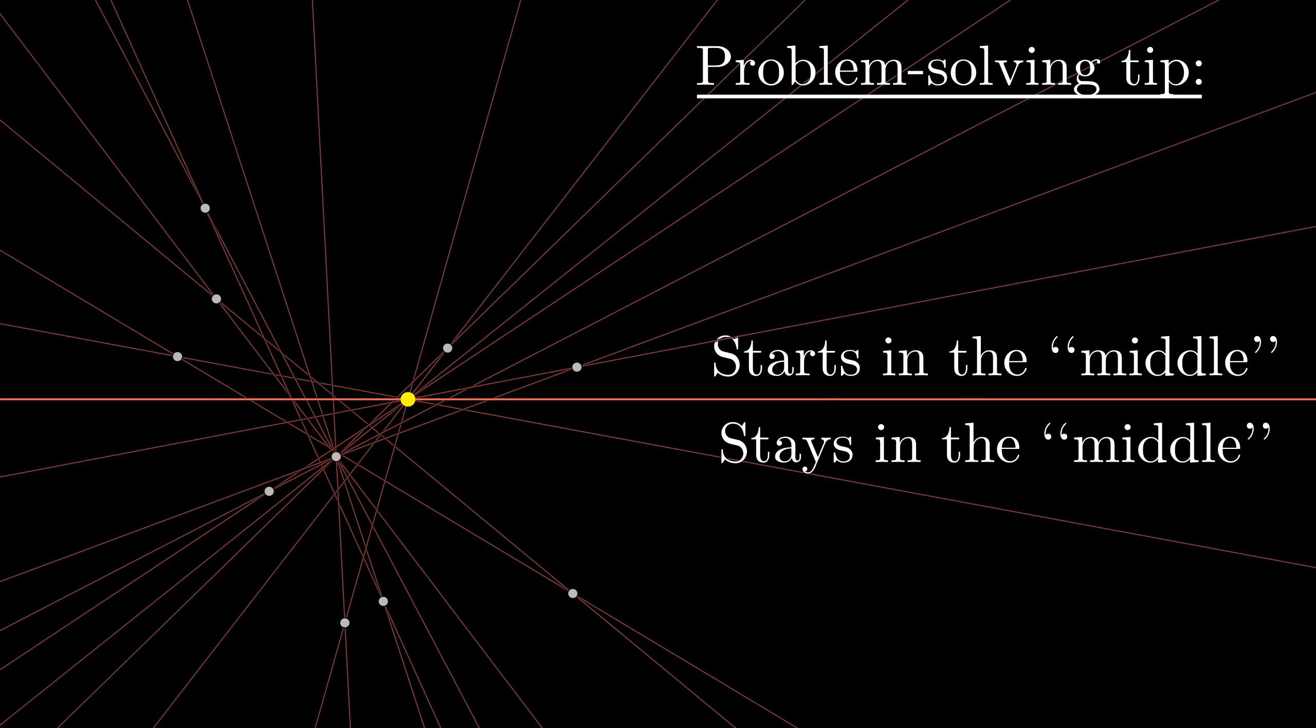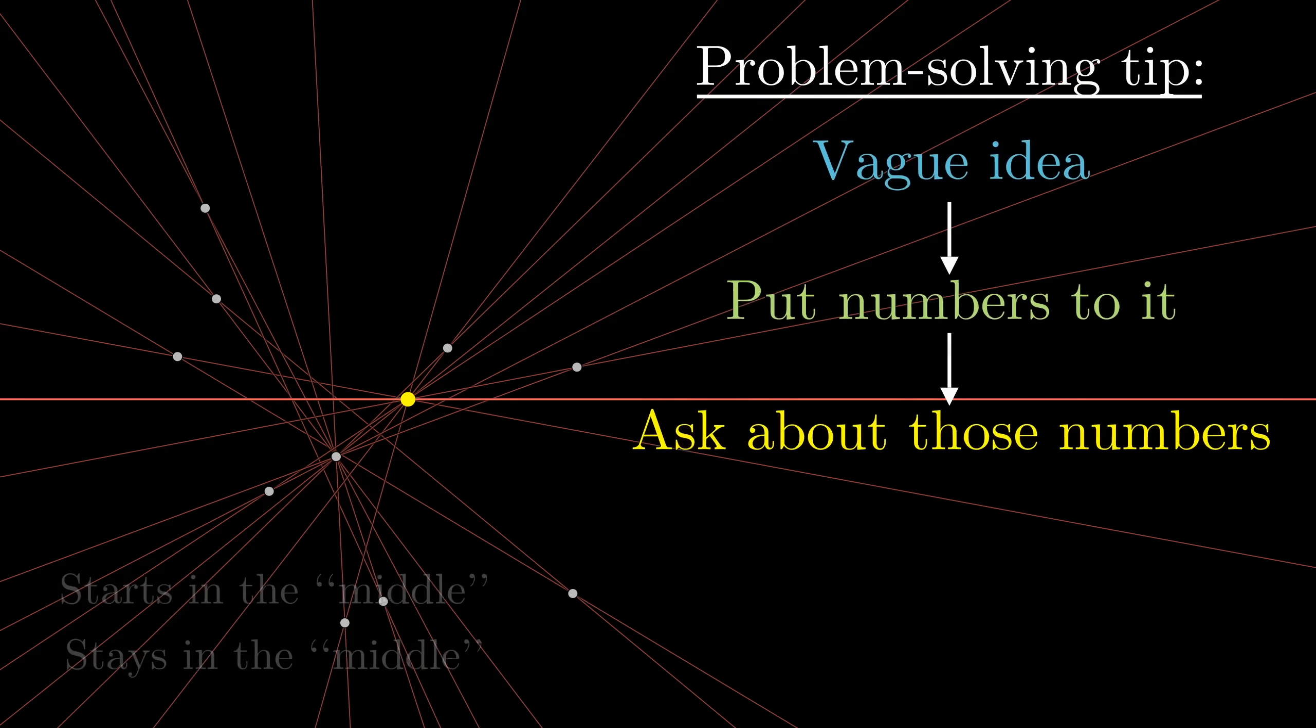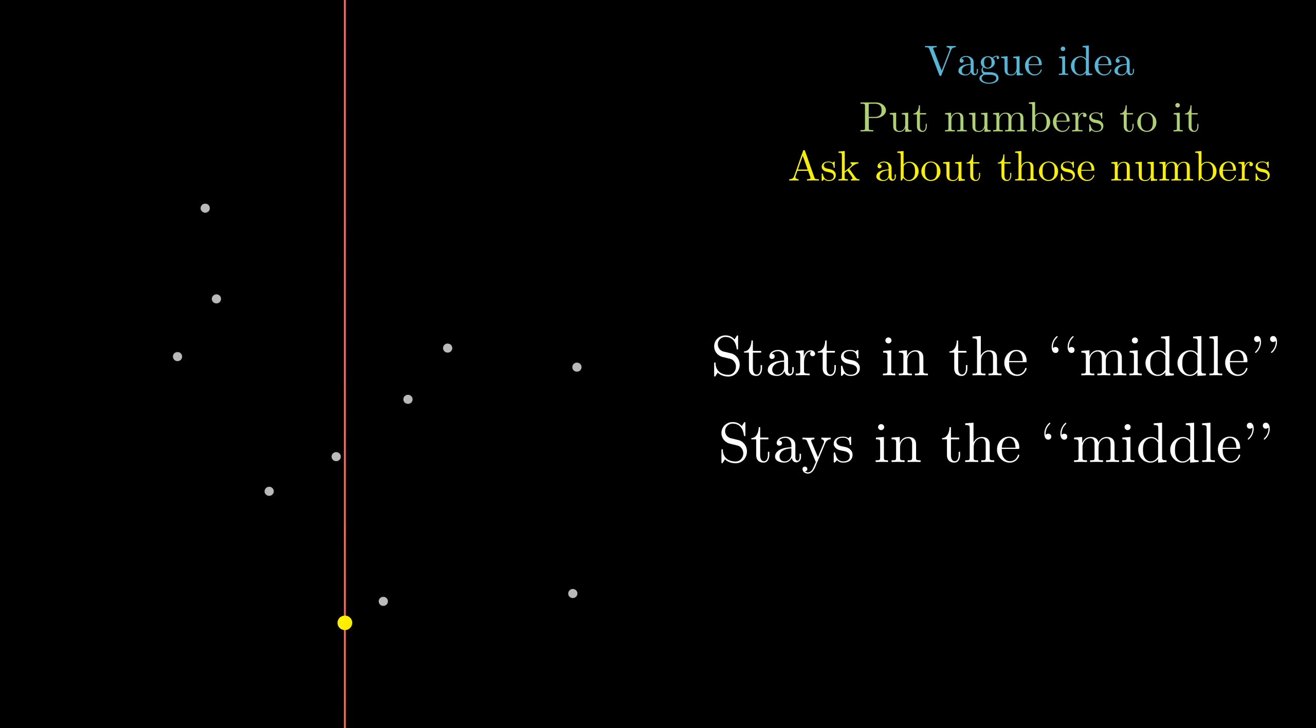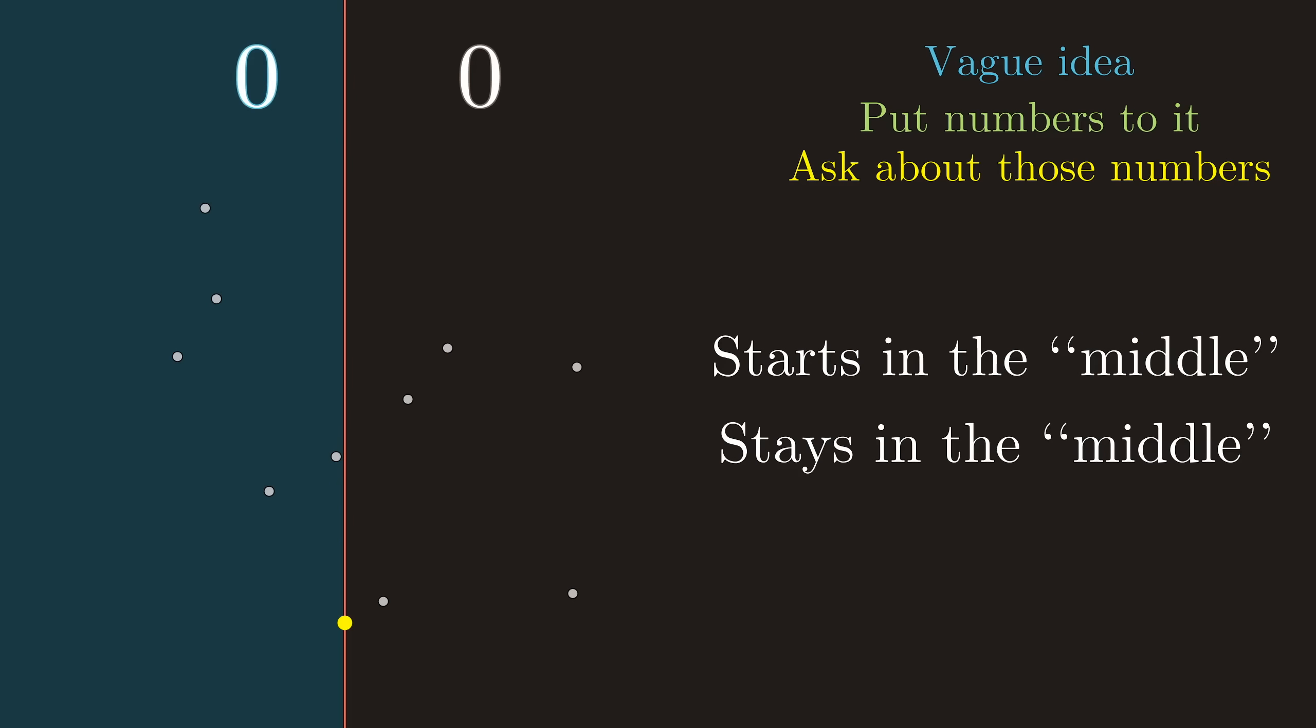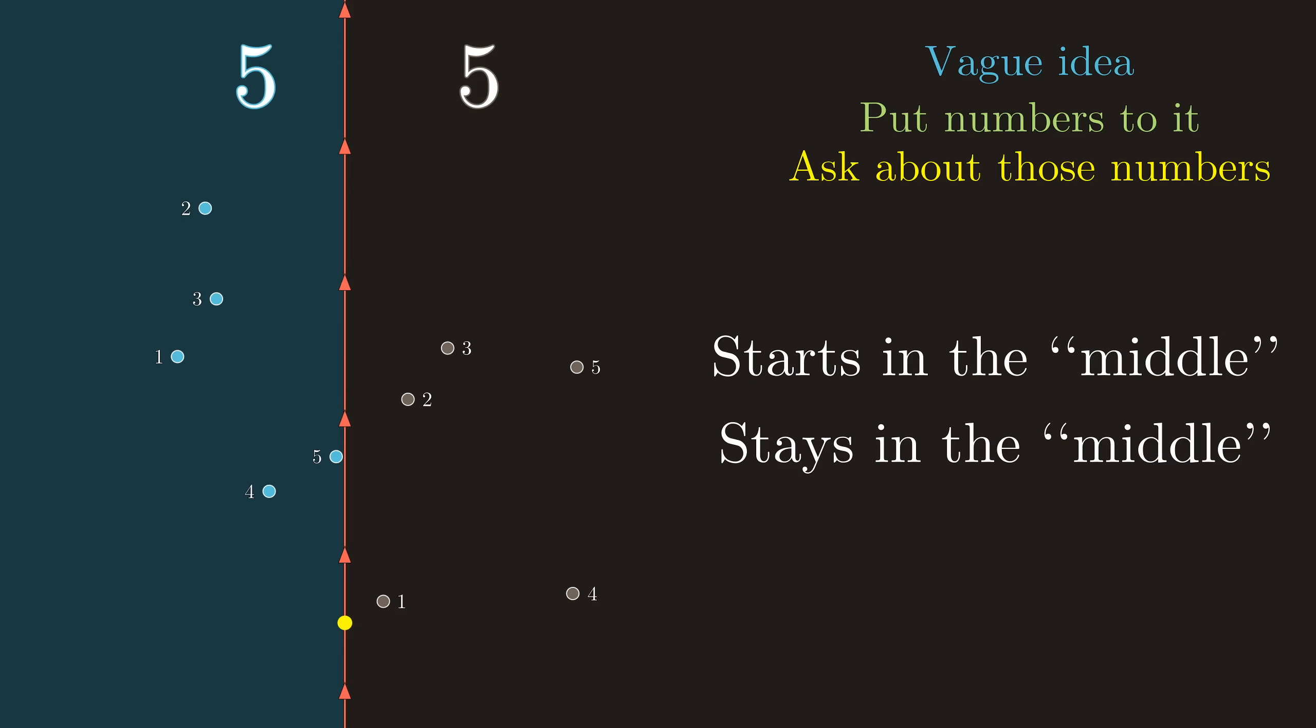As a general problem solving tip, whenever you have a vague idea that feels productive, you should of course find a way to be more exact about what you're saying, but preferably put numbers to it, and then see if you can ask questions about those numbers. In our example, one way to formalize this idea of a middle is to count how many points are on either side of the line. If you give the line some orientation, you can reasonably talk about a left half, say coloring all the points of the left blue, and a right half, say coloring all the points on the right brown, and what it means for a line to be in the middle is that there are as many blue points as there are brown points.